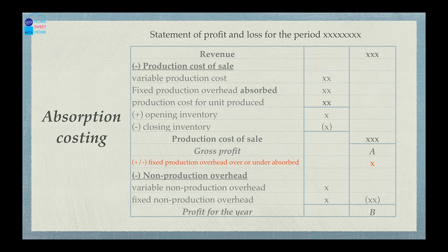We need to make sure we know that this cost includes a fixed contribution. What we can do is calculate the production cost of sales. For production cost, we can absorb fixed production overhead. The absorption costs include fixed production overhead. We can calculate production cost per unit produced, including variable production cost, fixed production overhead absorbed, production cost per unit, opening inventory, closing inventory, and then the production cost of sales.